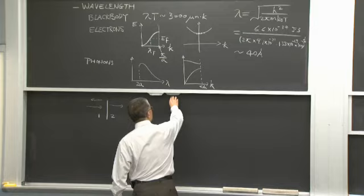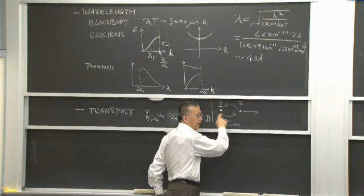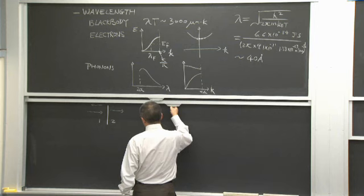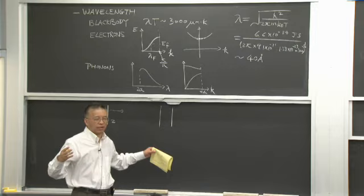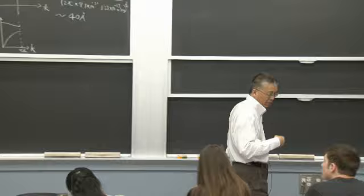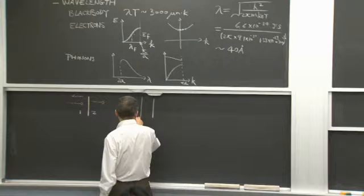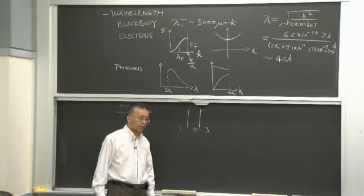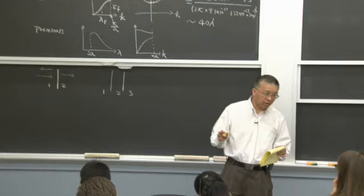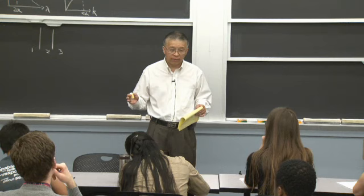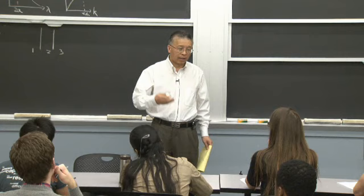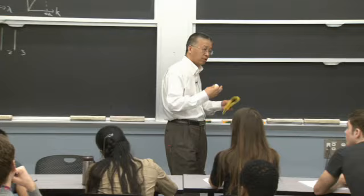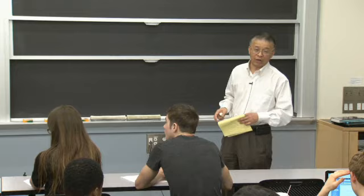I could have layers — one, two, three — multilayers, like optical coatings. How do I calculate the transmission and reflection? It turns out the waves are very similar whether it's an electron wave, a phonon wave, or an electromagnetic wave. The general wave behavior in terms of interference, diffraction, and tunneling all exist for all waves, and there are different technologies based on these phenomena.